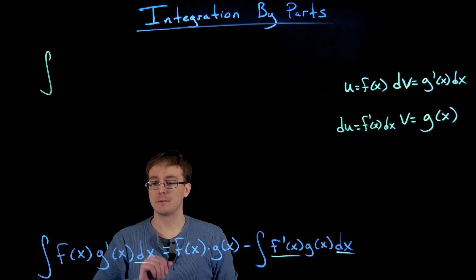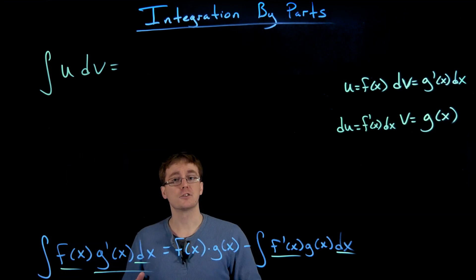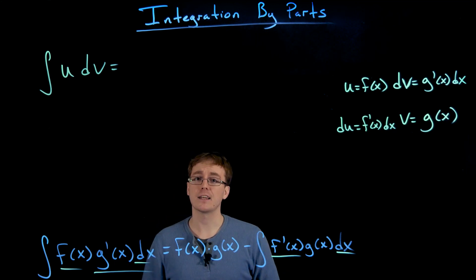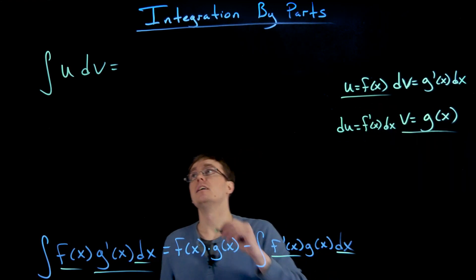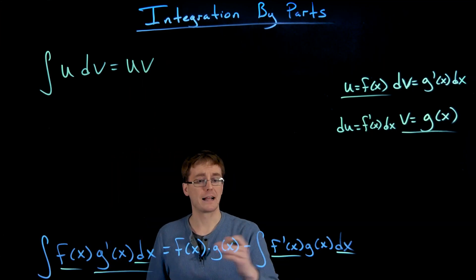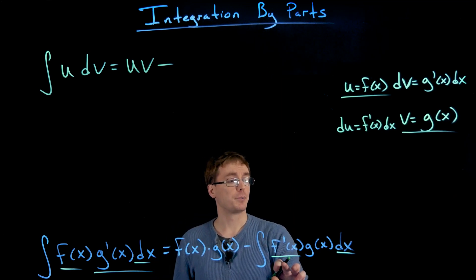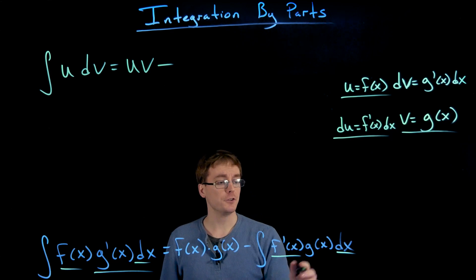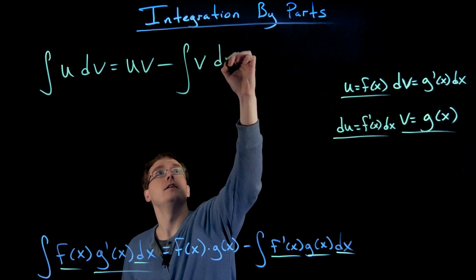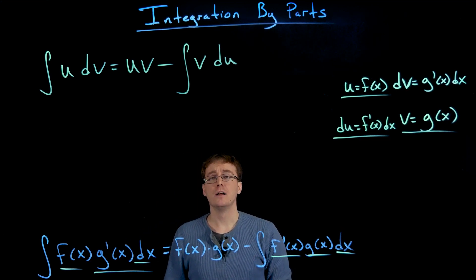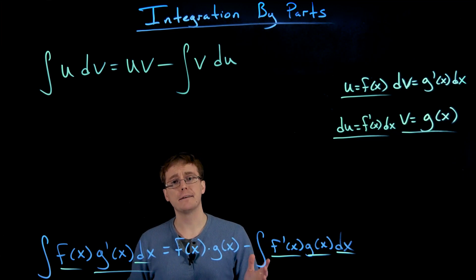Making these substitutions, the left hand side — the integral of f times g prime — becomes the integral of u times dv. On the right hand side, f times g becomes u times v, and the integral of f prime times g times dx, where f prime dx is du and g is v, becomes the integral of v times du. So our compact integration by parts formula is: the integral of u dv equals uv minus the integral of v du.